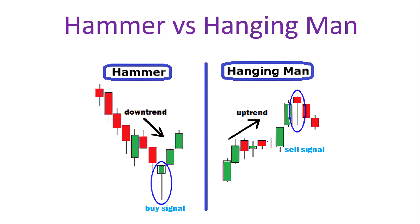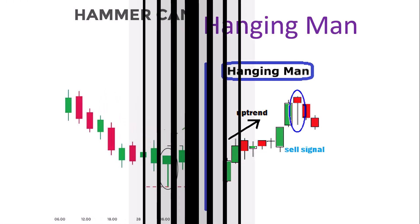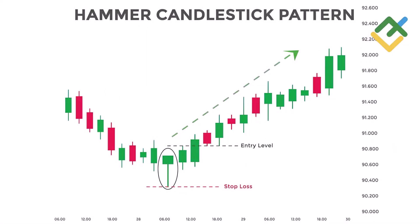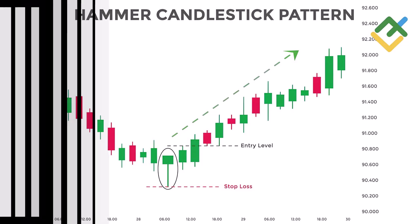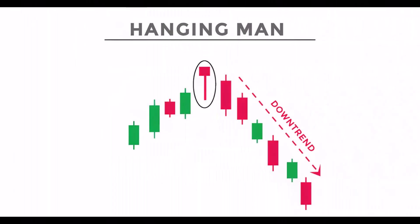Now let's delve into the specifics of when and where this pattern appears. If the paper umbrella emerges at the bottom of a downward rally, it takes on the name hammer. Conversely, if it appears at the top of an uptrend rally, it is referred to as the hanging man.